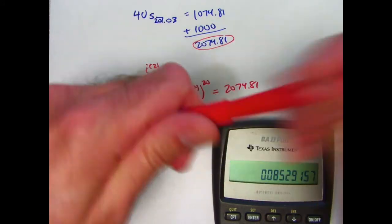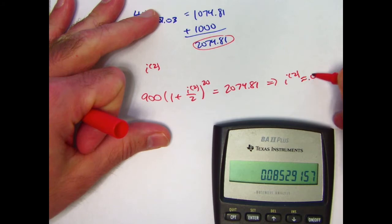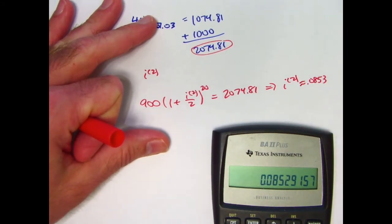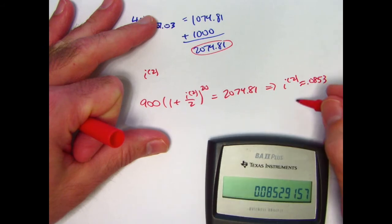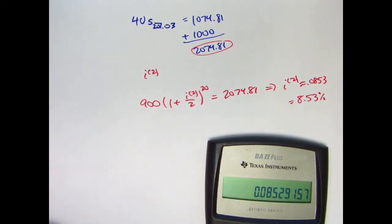The answer for I2 is approximately 0.0853. And I think if we use more decimal places, this probably would still be the case. 8.53%. And that is the answer to this problem.